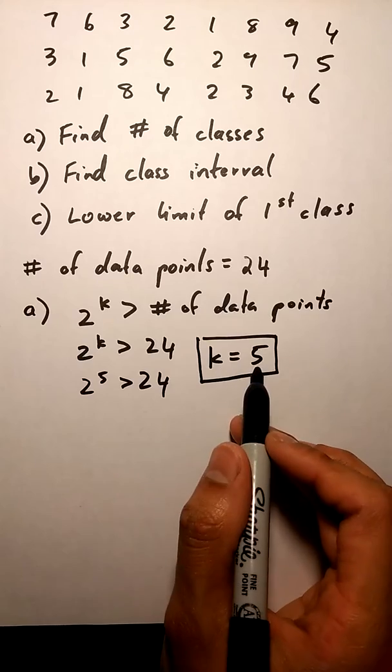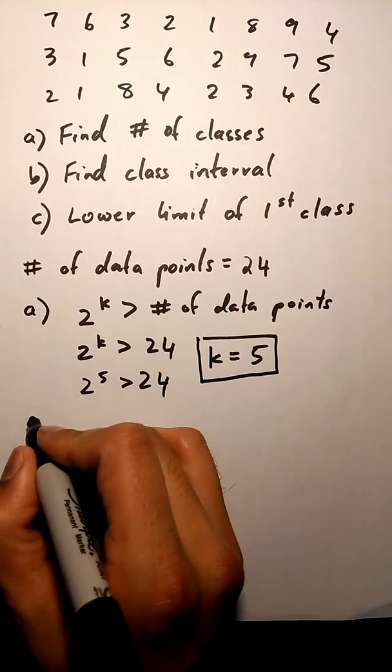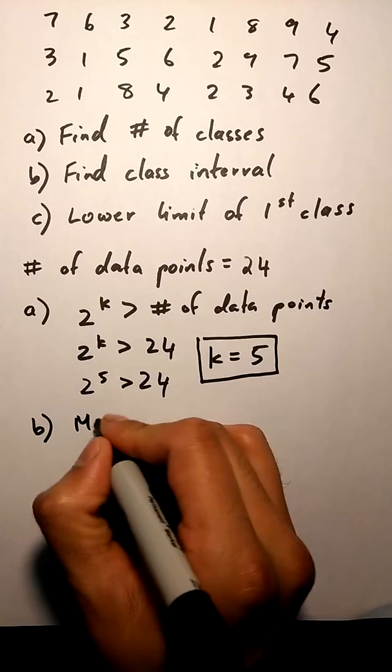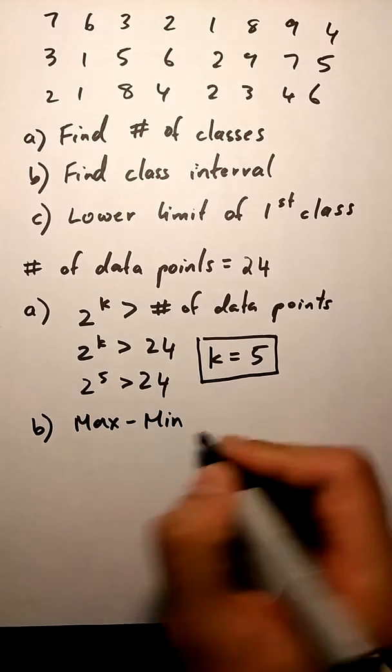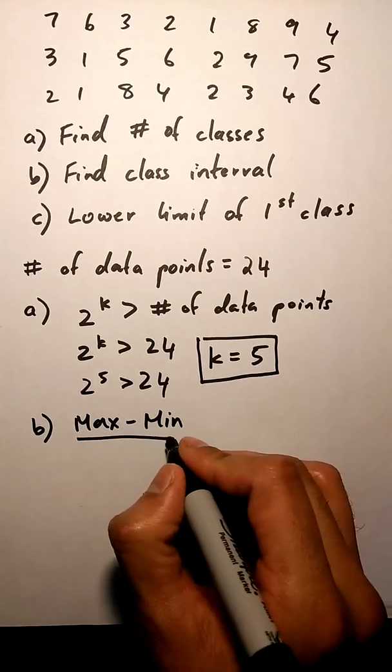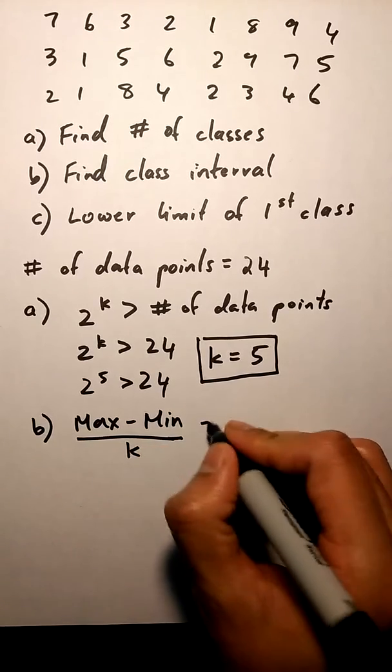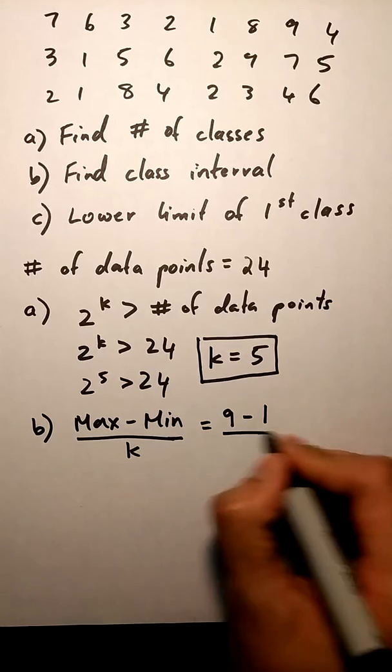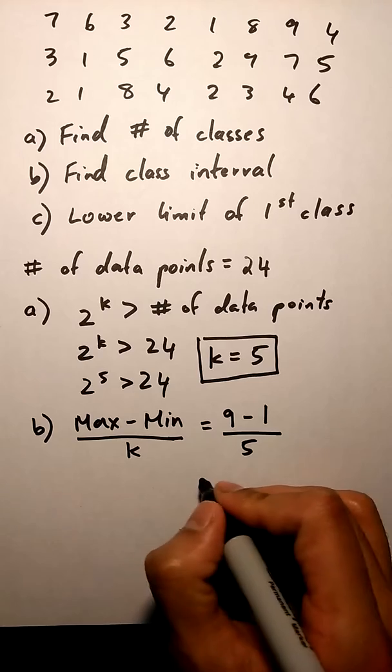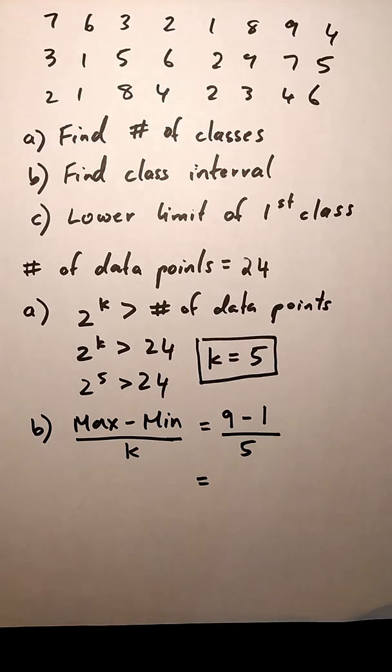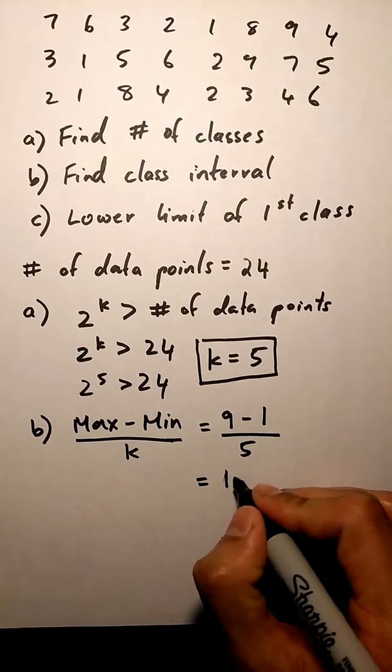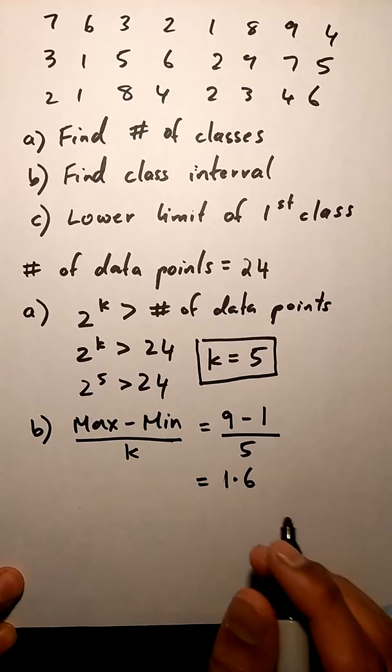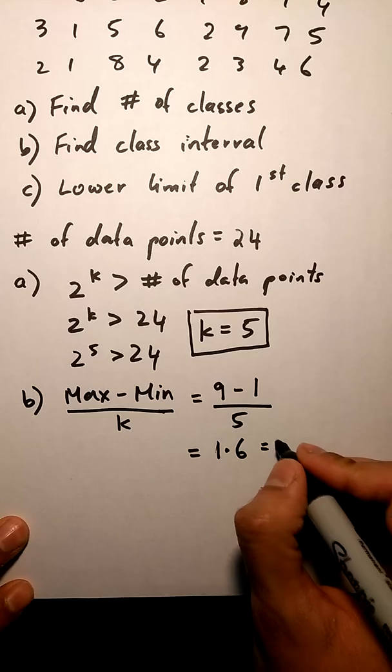Once we found our K, which is our number of classes, the next thing we do is find our class interval. Our formula for class interval is max minus min over K. In this case, our max is 9, our min is 1, our K is 5. That gives us 1.6. We have to always round this number up, so I'm gonna round it up to 2.